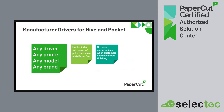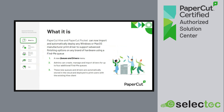To put it simply: any driver, any printer, any model, any brand. PaperCut Hive now offers total freedom in manufacturer driver choice for Find Me print queues. The PaperCut global print driver isn't going anywhere — it's still the powerful default driver installed with the default PaperCut printer queue to ensure maximum compatibility, simplicity, and easy setup. For customers wanting to use advanced finishing options like stapling, hole punching, and tray selection, they can now load any Windows or macOS print driver and automatically deploy it to their entire user base through Hive.